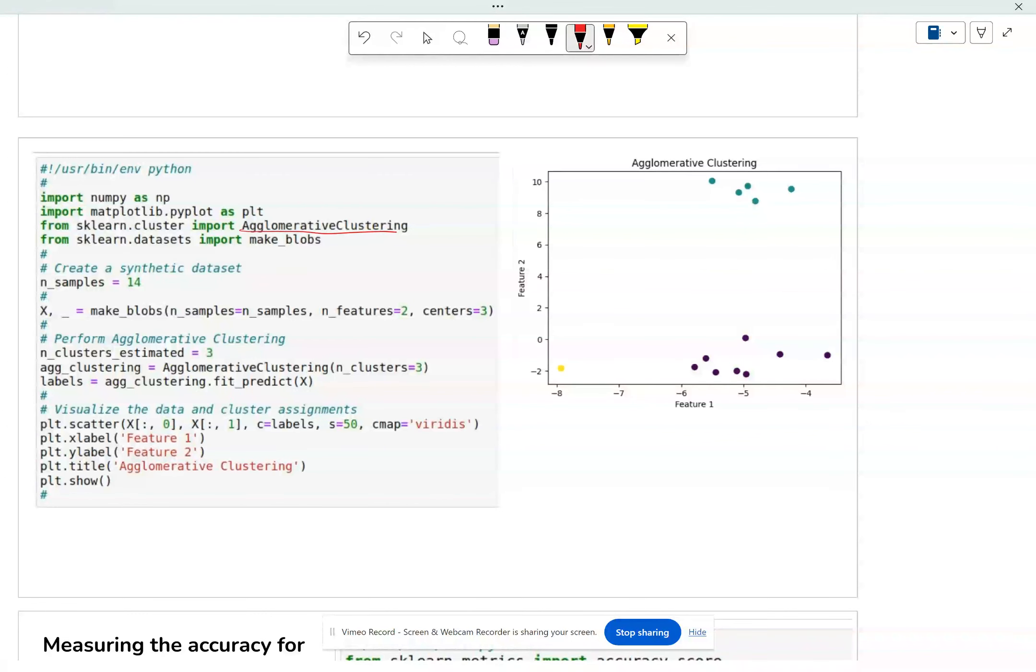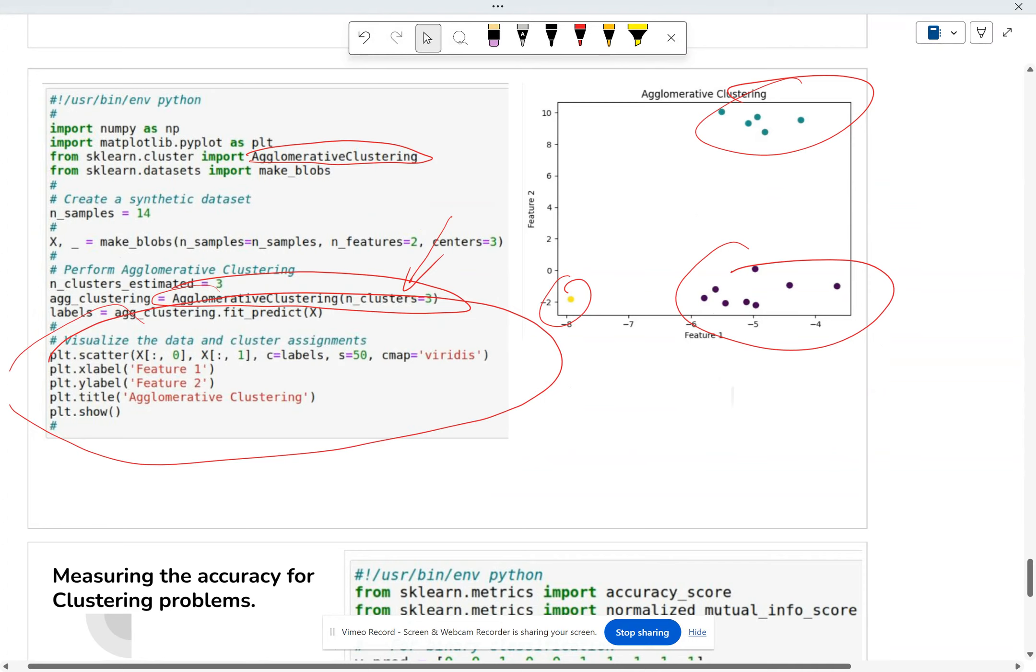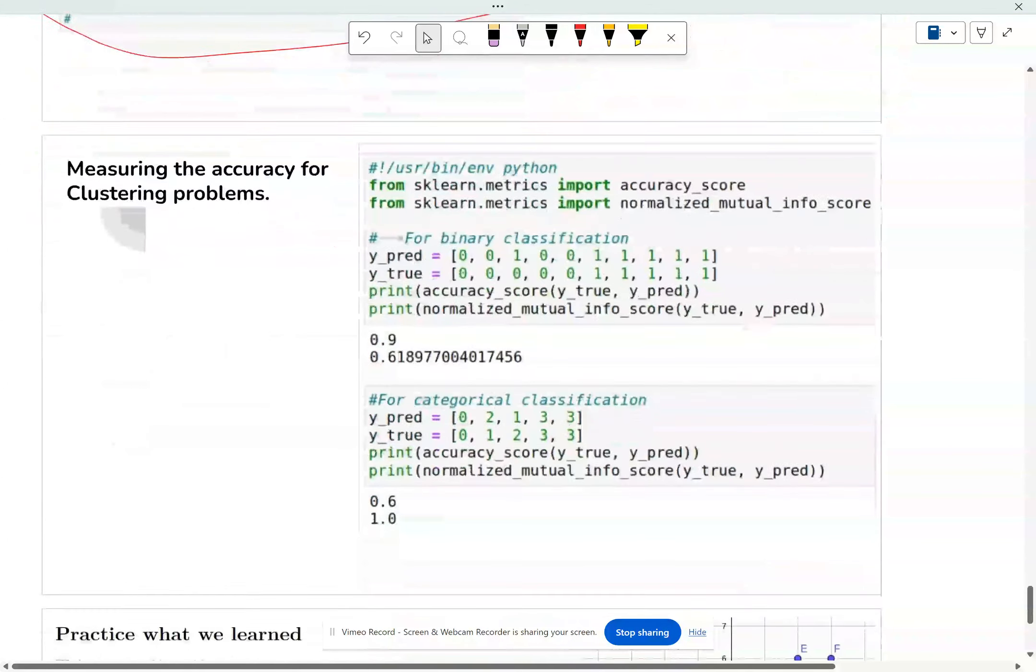So when you use sklearn, it is also really simple. It's just one line and you say that it's three clusters and you will automatically separate them into three clusters. Over here, I draw them out.